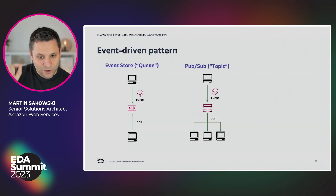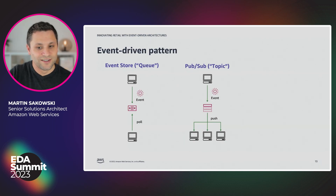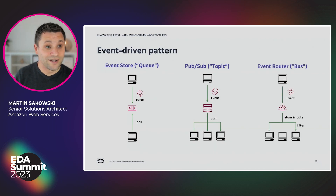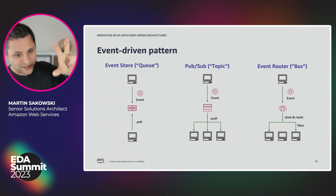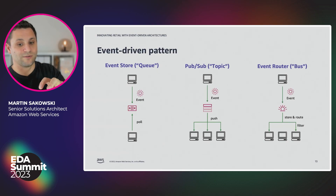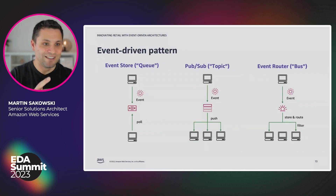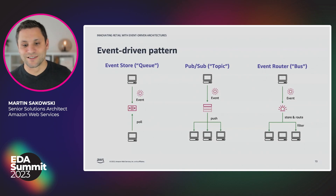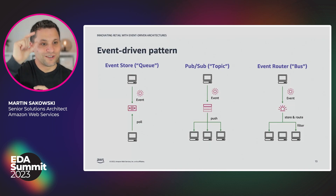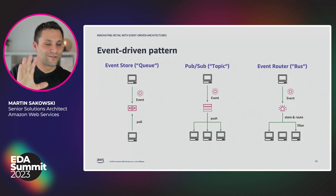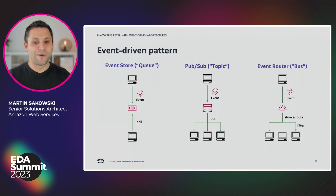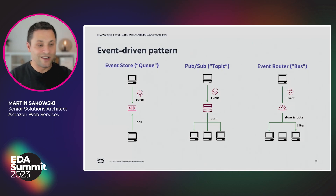This is another way of decoupling, but the consumer needs to be able to receive and process the event at the moment it is pushed. There's another pattern called an event router or bus. Producers send events to a router, which stores, filters, and directs the events to appropriate downstream consumers. Consumers only get events they really care about. Some routing logic is needed in the middle, but they're still decoupled from the producer. The good thing is you don't have to decide on one pattern for your entire application — you can combine these patterns and build even more advanced event-driven patterns like CQRS and so on.